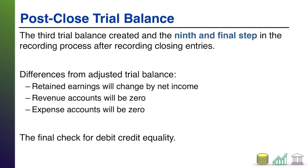This is going to be the third trial balance that we create. We started with what we call the trial balance, which is an unadjusted trial balance. We then did the adjusted trial balance, which contained the effects of all the adjusting journal entries. Right before this, in the eighth step of the accounting cycle, we do closing journal entries. So this post-close trial balance simply updates to reflect the impact of those closing journal entries.